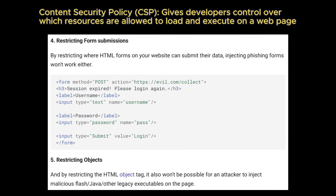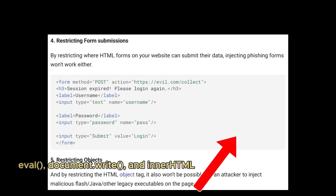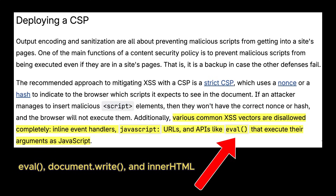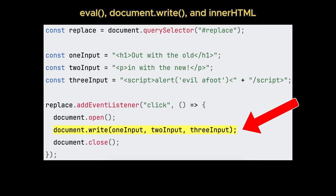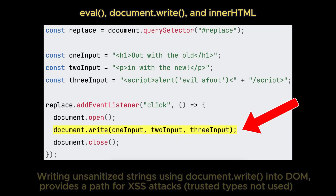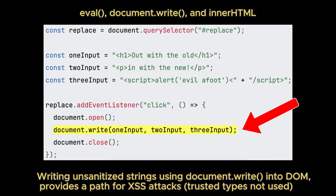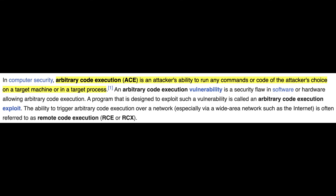Finally, developers should avoid dangerous functions such as eval, document.write, and unsanitized innerHTML, which can turn even seemingly harmless input into a vulnerability. These three functions are inherently risky because they treat strings as executable code rather than plain data. When a web application inserts untrusted input into these functions, it effectively gives attackers a way to run arbitrary JavaScript in the victim's browser.